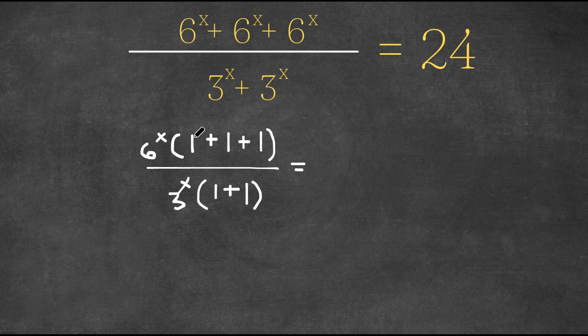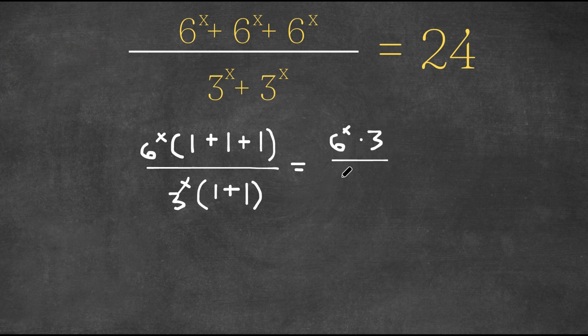Now this would be equal to, well, 1 plus 1 plus 1 is 3. So we get 6 to the power of x times 3 over 1 plus 1 is 2. So we get 3 to the power of x times 2.